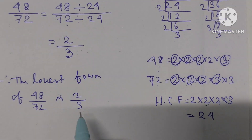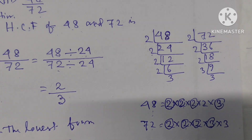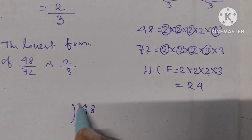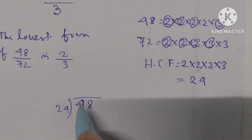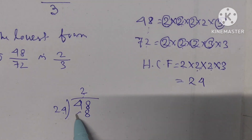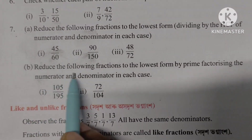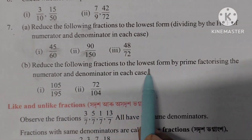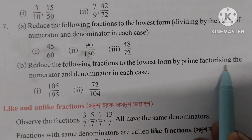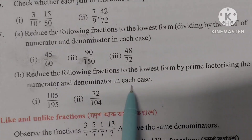Therefore, the lowest form of 48 by 72 is 2 by 3. If you find it difficult, you can also do 48 divided by 24 using the division method — that gives 2. Now, part B: reduce the following fractions to lowest form by prime factorizing the numerator and denominator in each case.